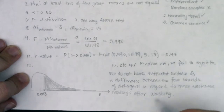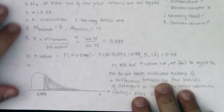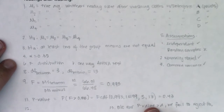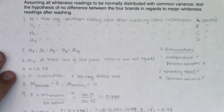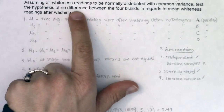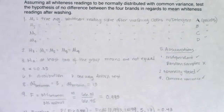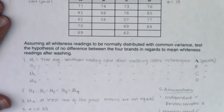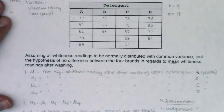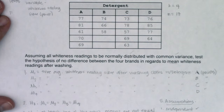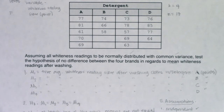That conclusion sentence came right from the setup of the problem — no need to reinvent the wheel. It's our way of saying: statistically speaking, I have no proof that one detergent is better than another. Go ahead and use detergent A, B, C, or D — your cloths are going to get just as white regardless of which specific brand you use.